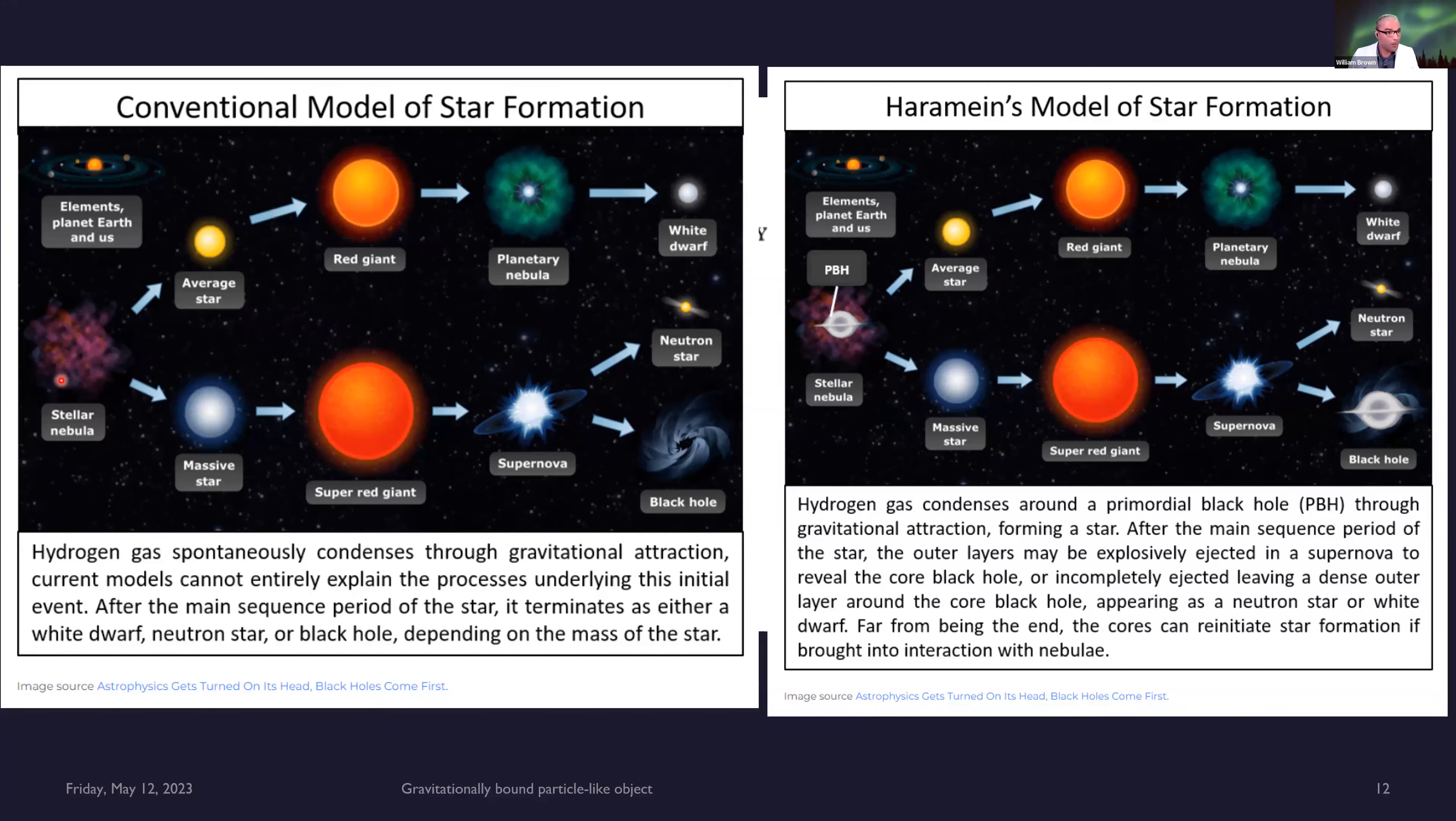In the conventional model of star formation, something triggers the collapse of a stellar nebula, a hydrogen gas cloud. And with a massive star, it goes through this cycle and forms a black hole.